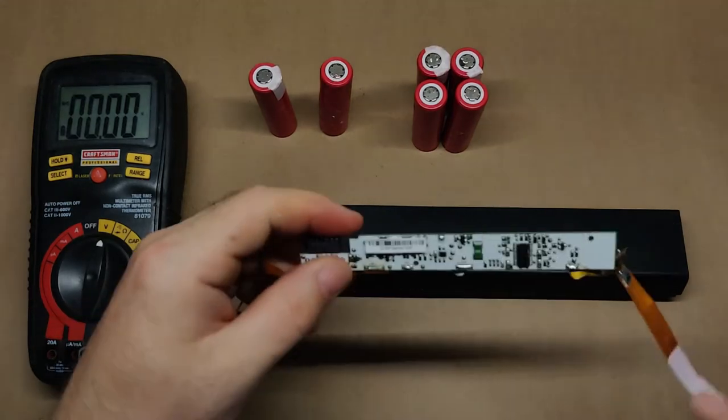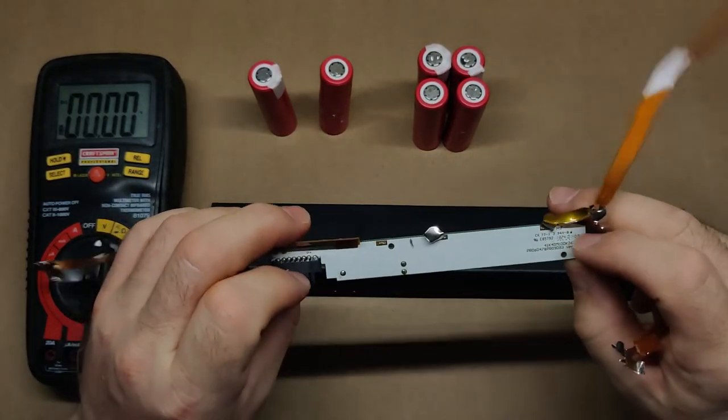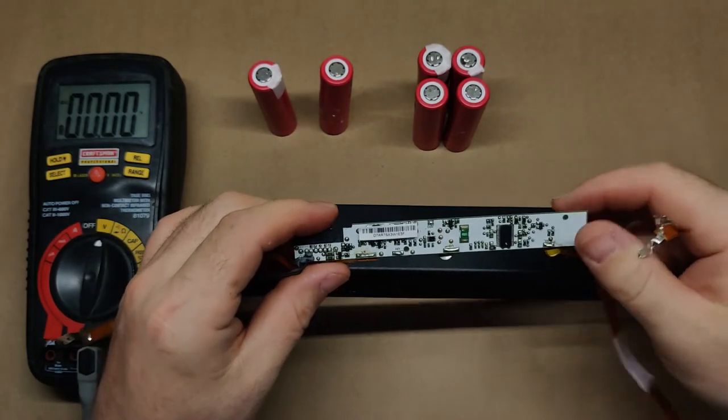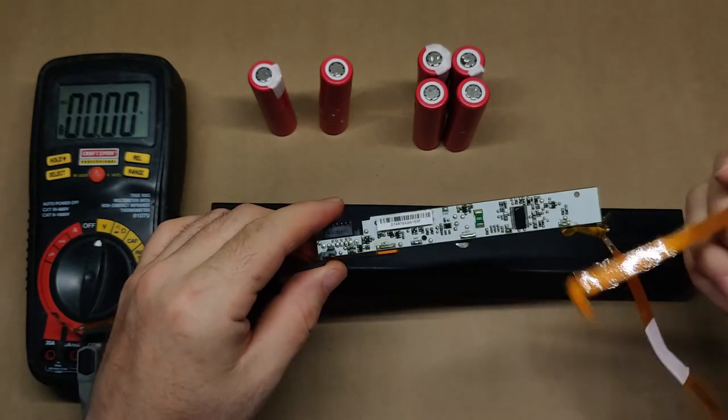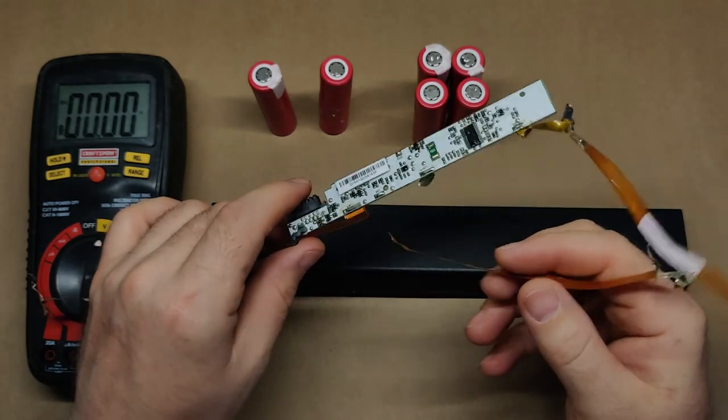And what did we find? Well, first of all, we found the Brain Board. And this handles all of the charging, and discharging, and voltage regulation, and power balancing to all of the cells that are inside.